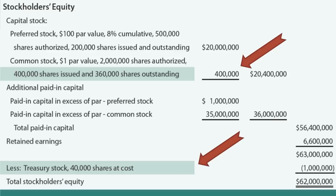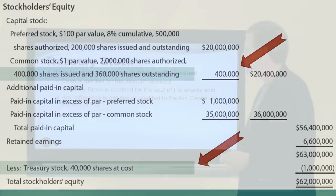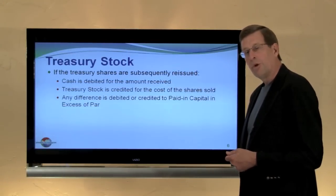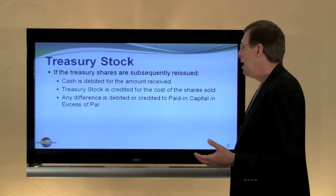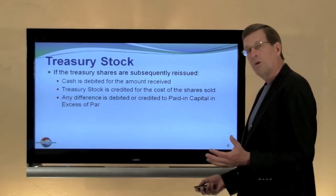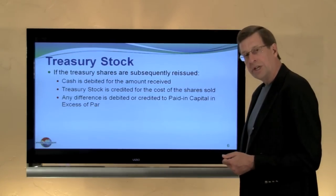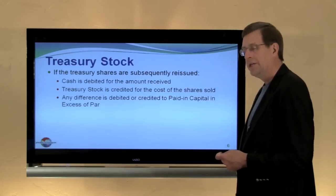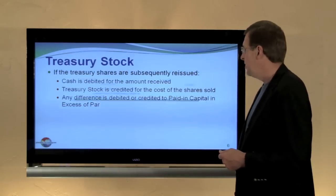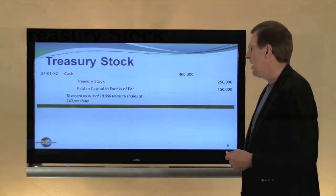Our total stockholders' equity is now only $62 million instead of $63 million as it was before we bought back the shares. We used a million dollars of cash and acquired treasury stock, causing the million-dollar contraction in equity. If treasury shares are subsequently reissued, cash is debited for the amount received, and we credit treasury stock for the cost of the shares reissued. Any difference would ordinarily be debited or credited to paid-in capital.